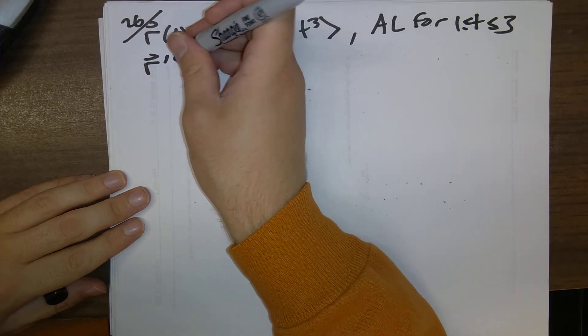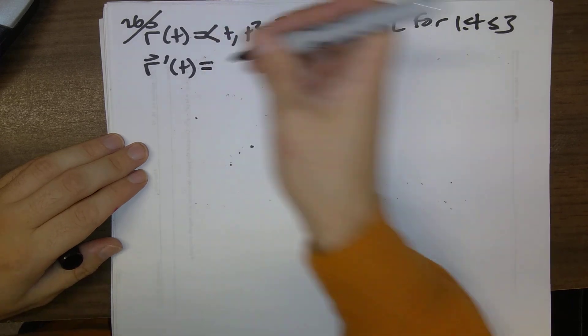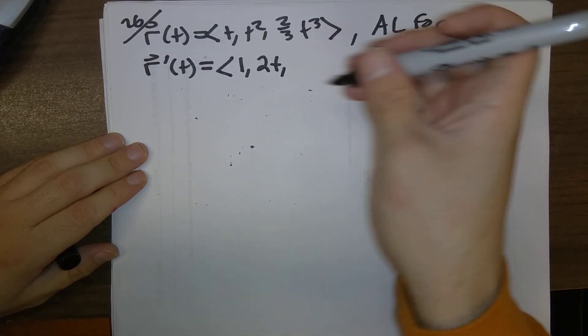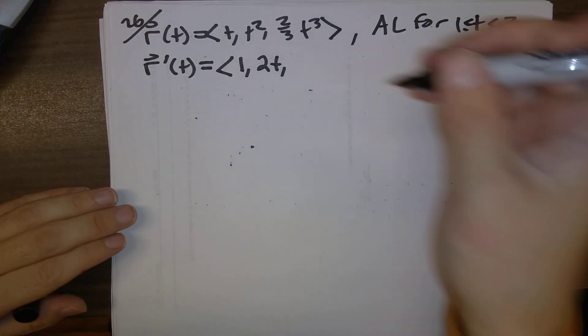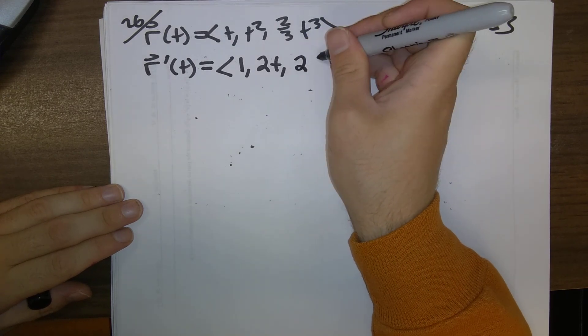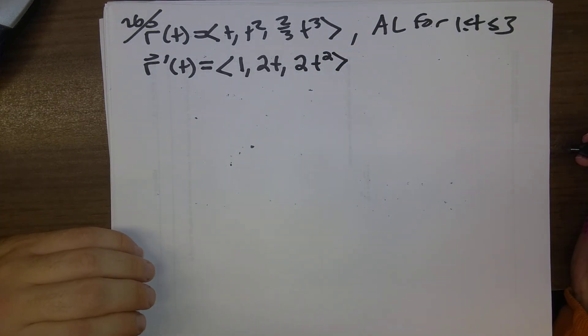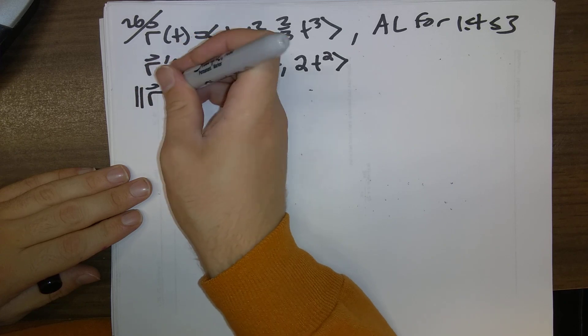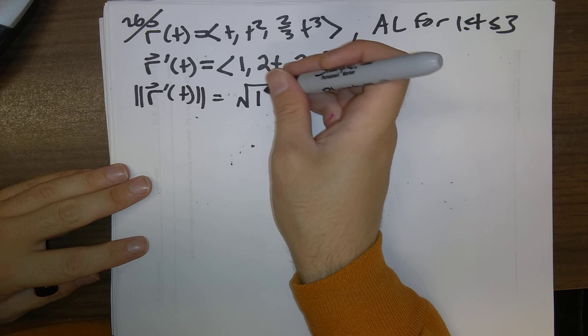We know we're going to need, we'll write down the formula in just a second, but we should know that we're going to need the derivative. This is the, and we're thinking of this as a particle moving along. This is the velocity vector. I think that looks like our velocity vector.